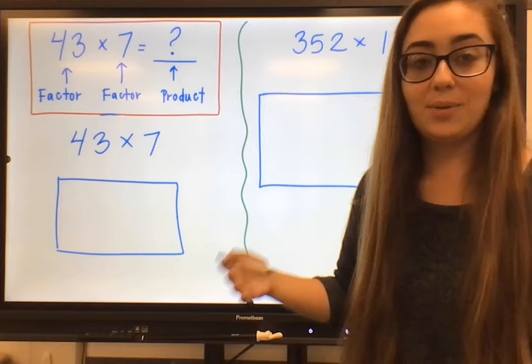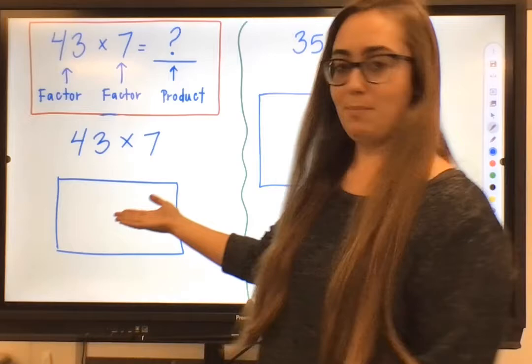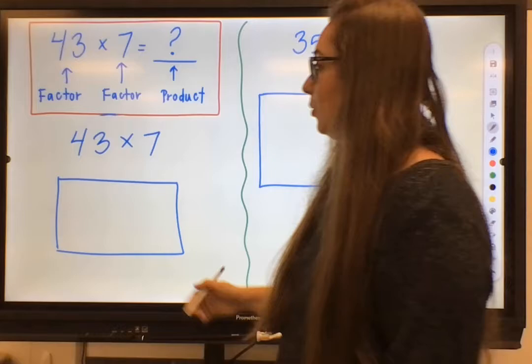All right, so now we are going to solve with that second strategy for these same multiplication problems. We're going to use something called the area model. You also might hear it called the box model, the box method, because it makes a lot of sense because you use a box in order to solve it.